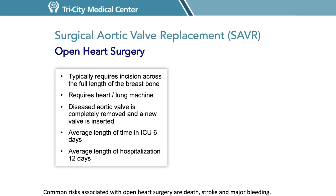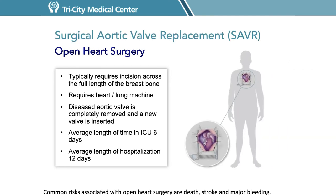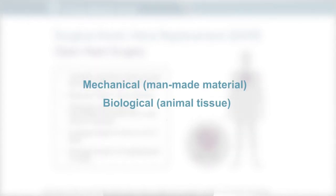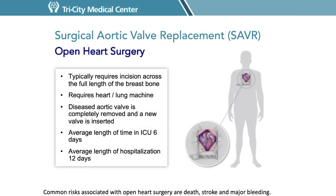Let's go through surgical aortic valve replacement, also known as open heart surgery. Most open heart surgeries are performed through an incision across the full length of the breastbone or sternum, called a median sternotomy. Occasionally they can be performed through smaller incisions, but usually require the use of a heart-lung machine, which temporarily takes over the function of the heart. During the surgery, the diseased aortic valve is completely removed and a new valve is inserted. There are two types of surgical valves: a mechanical man-made valve and a biological valve made out of animal tissue. The average length of stay after open heart surgery is about six days in the ICU and 12 days for hospitalization.